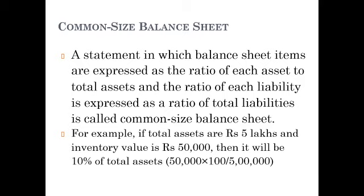In the common size balance sheet, all items are expressed as the ratio of each asset to the total asset — that is, all items are expressed as a percentage of the total asset. Liabilities are also expressed as a ratio of total liabilities. That is called common size balance sheet.